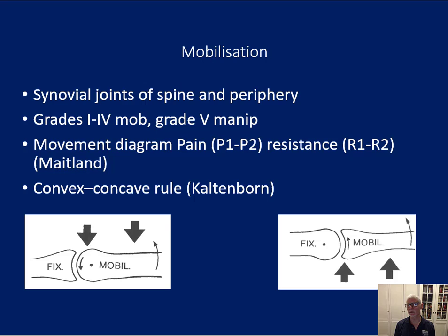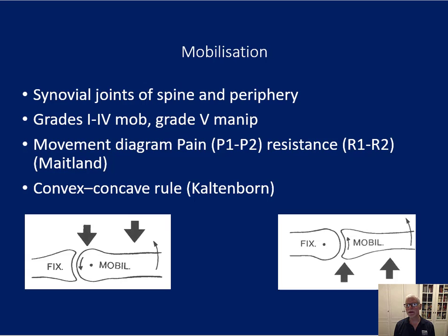Later, more research was done which would often challenge the original belief — not necessarily the effectiveness of the technique, but the model of how that effect occurred. Mobilization techniques involve moving joints normally within their normal range of motion. Going beyond normal range would typically be a manipulation. Alternatively, a more rapid, more forceful technique tends to be a manipulation, and less energy going into the tissues tends to be a mobilization.